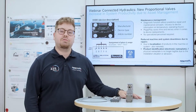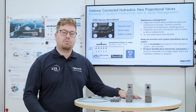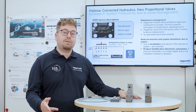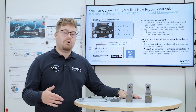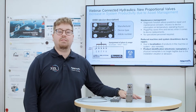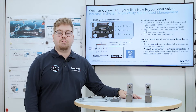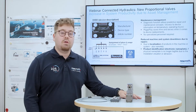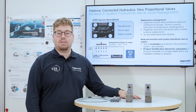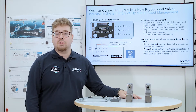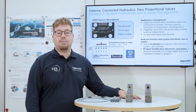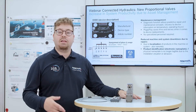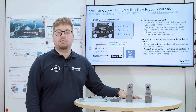One main advantage of IO-Link is the increased productivity thanks to asset management. Therefore we have the IO-DD — the IO Device Description — which contains every single relevant piece of information about our products. And second, we have the localization assignment, which helps you to easily describe every product at any given time and clearly identify it in the application.